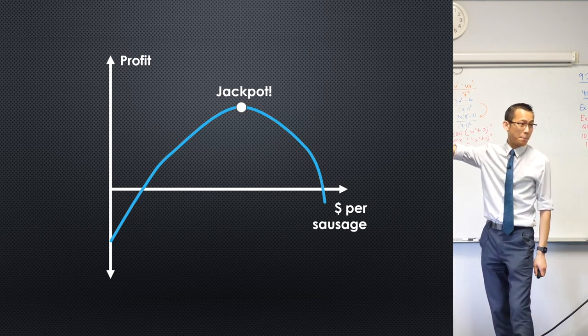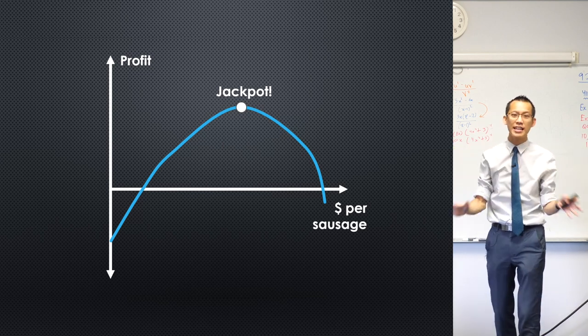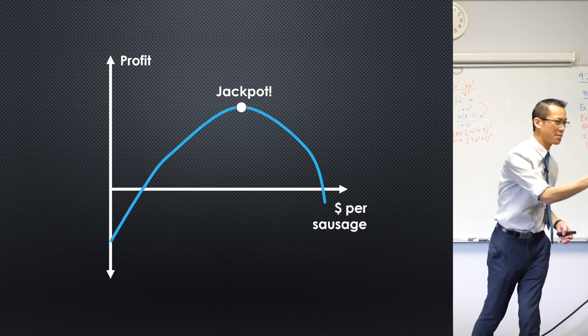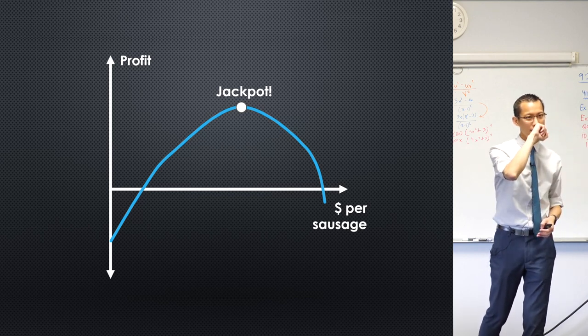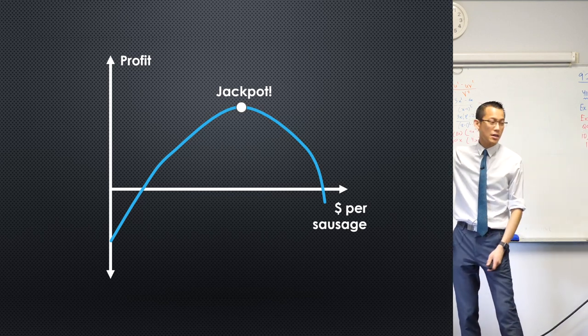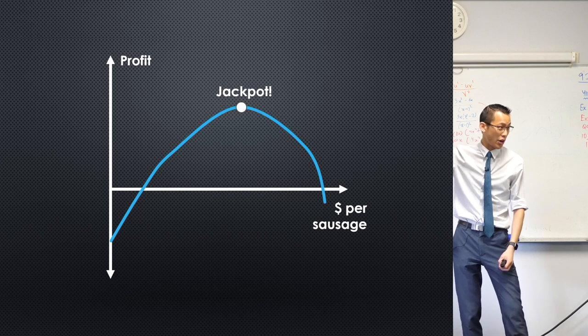But we have a name for this, right? We would call this a, it's a stationary, not just any stationary point. It's a maximum turning point. Thank you. So we're trying to find this maximum turning point.